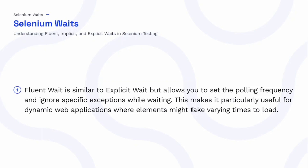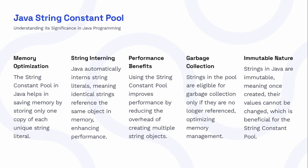The next set covers the Java String Constant Pool. First, memory optimization: the String Constant Pool helps save memory by storing only one copy of each unique string literal. Next, string interning: Java automatically interns string literals, meaning identical strings reference the same object in memory, enhancing performance. Using the pool also reduces the overhead of creating multiple string objects. Strings in the pool are eligible for garbage collection only when no longer referenced. Finally, strings in Java are immutable — once created, their values cannot be changed.